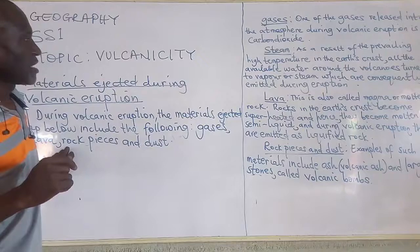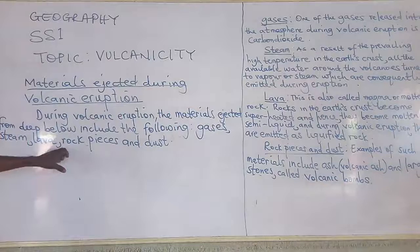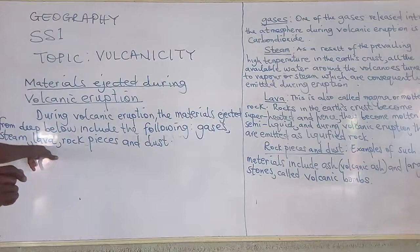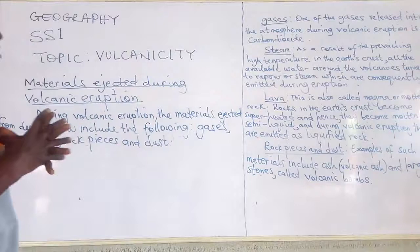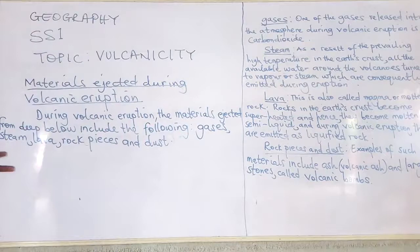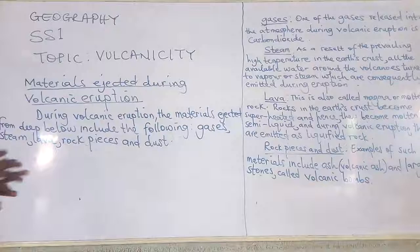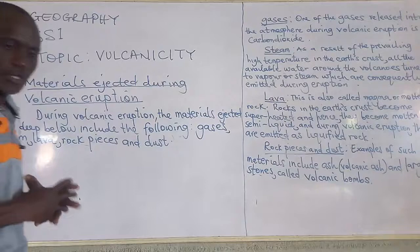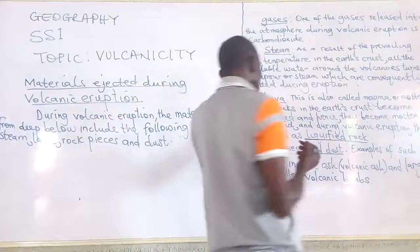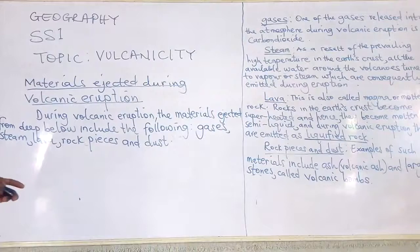Another material emitted during volcanic eruption is lava. Another name for lava is magma or molten rock. All the rocks in the interior of the earth become super-heated as a result of the prevailing high temperature, to the extent that they turn to semi-liquid. During volcanic eruption, what is emitted is this liquefied rock, also called lava — L-A-V-A.